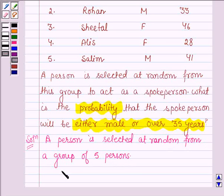And the total number of possible outcomes are hence five.